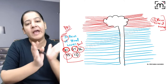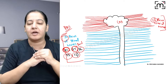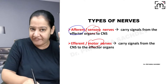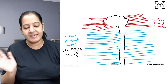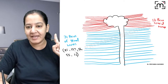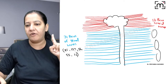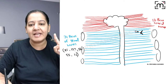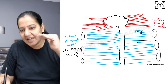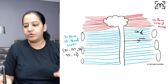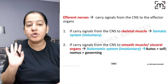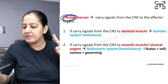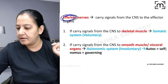The peripheral nervous nerves are of two types: sensory and motor. Sensory nerves are also known as afferent, and motor nerves are also known as efferent. The nerve which carries a signal from the organ towards the CNS is sensory or afferent, and the nerve which carries the signal from the CNS towards the organ is motor or efferent. To explain the autonomic nervous system, I am interested only in efferent or motor nerves.